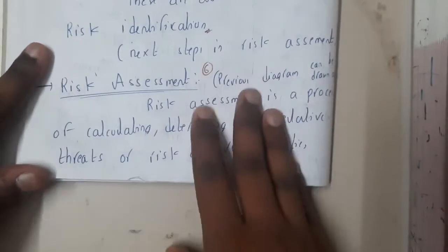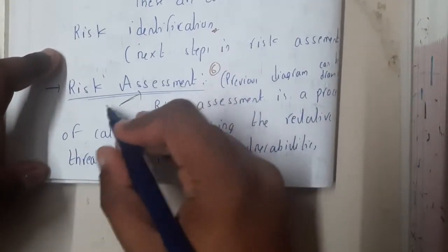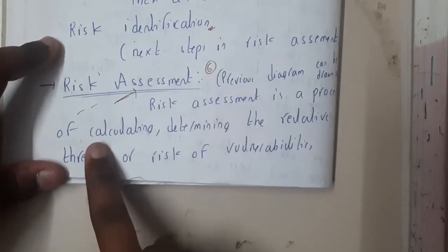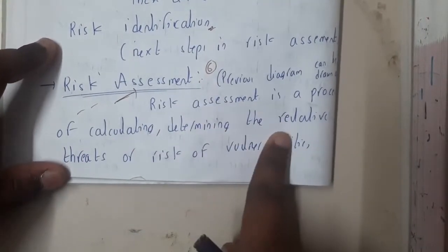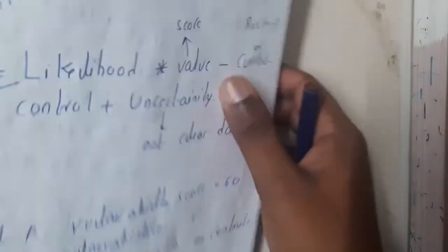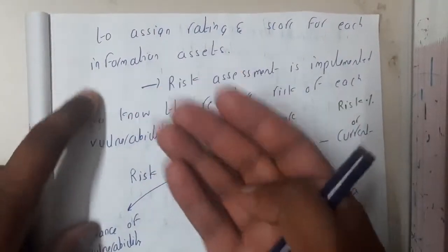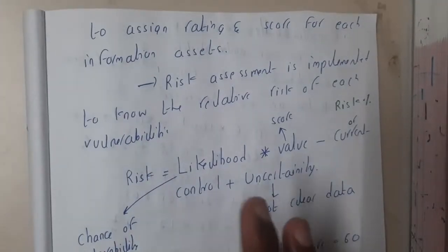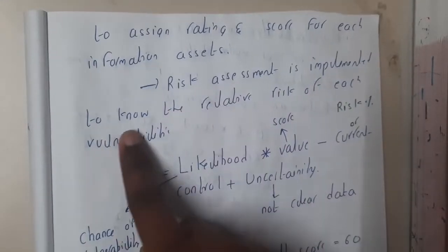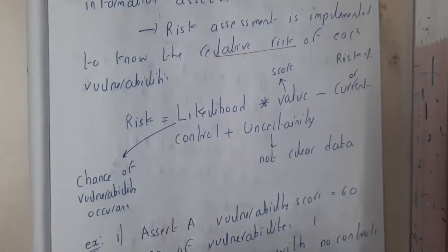So what is risk assessment? You are assessing something — checking some values. Risk assessment is a process of calculating or determining the relative threat or risk of a vulnerability. Basically, it determines how much chance there is for the occurrence of a risk. So risk assessment is implemented to know the relative risk.